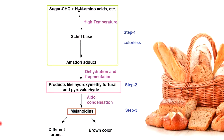In short, the Maillard reaction can be considered as a multifaceted reaction occurring in three primary stages. The first one is the initial condensation of a carbonyl compound — for example, a reducing sugar — with an amine, followed by a series of reactions leading to the formation of the Amadori product.